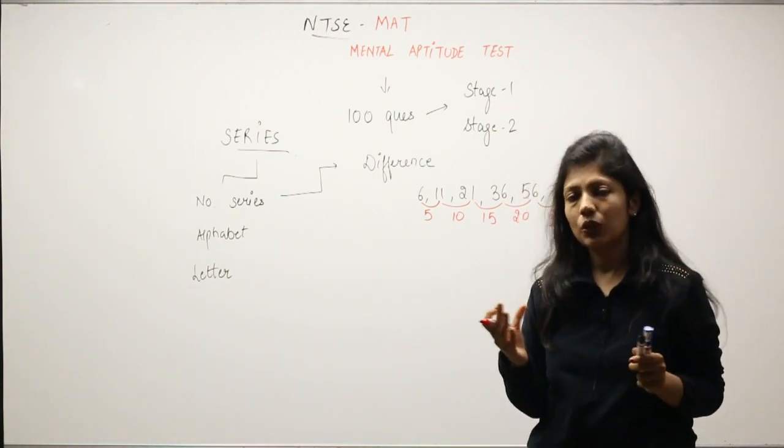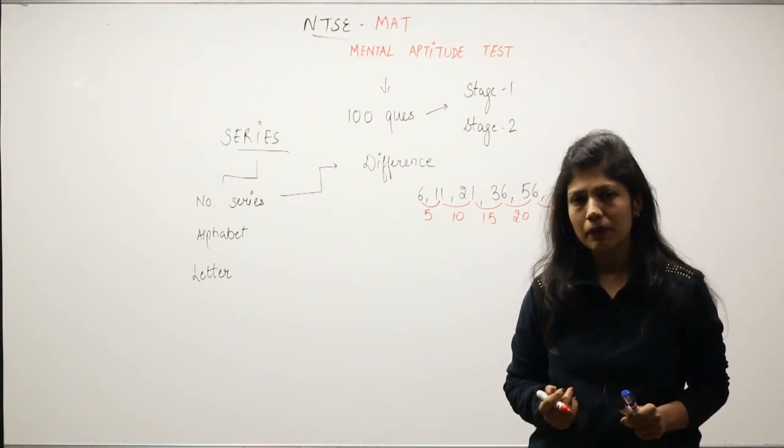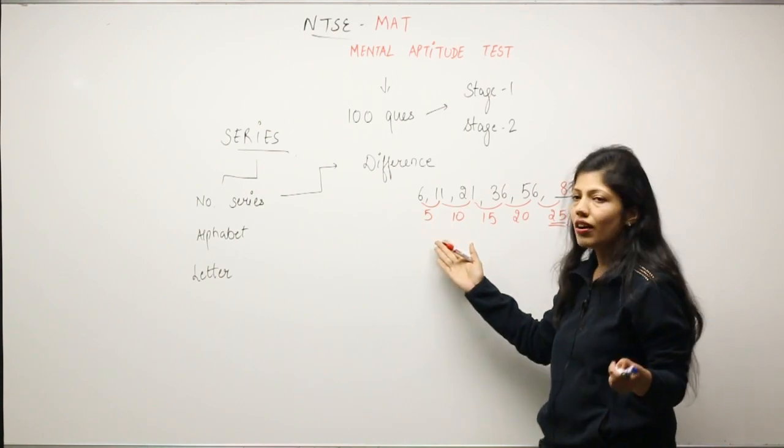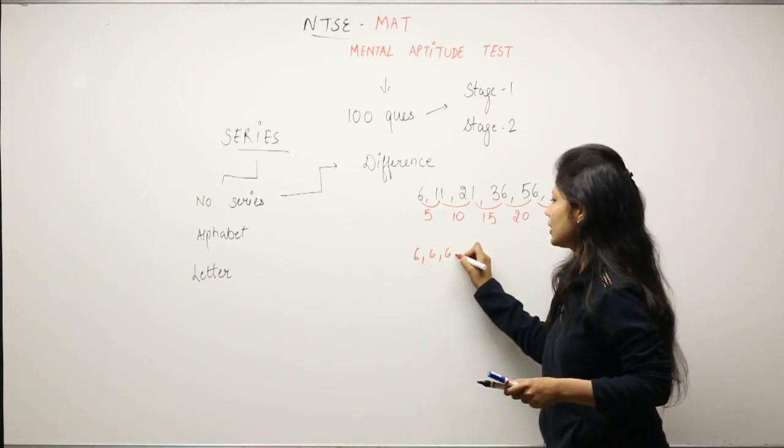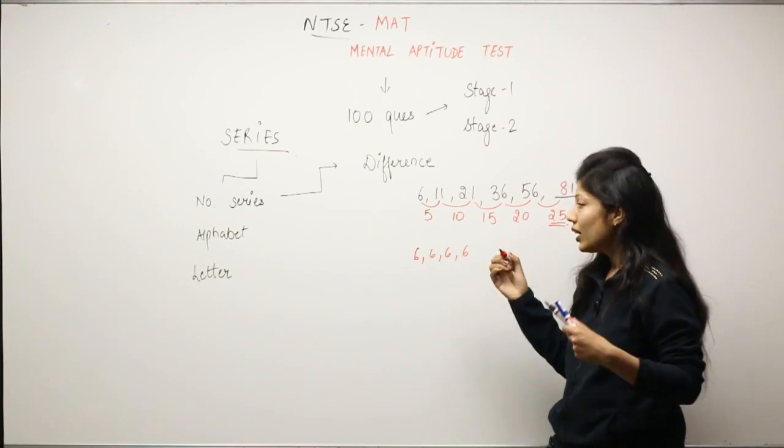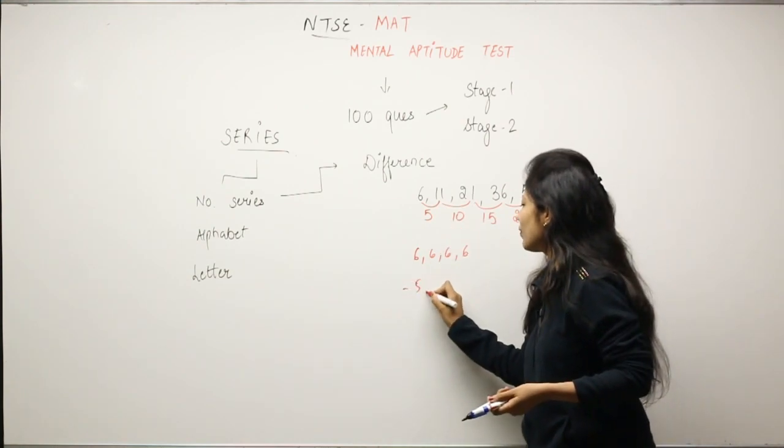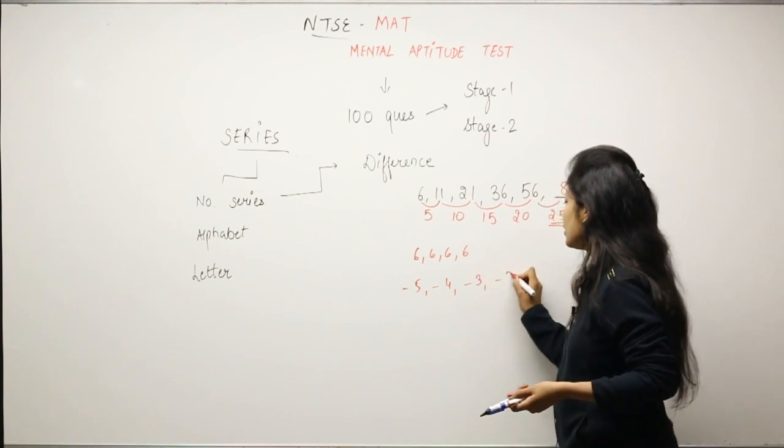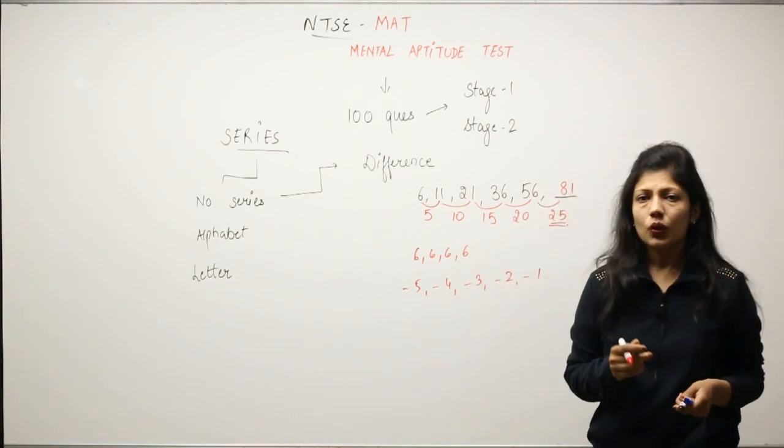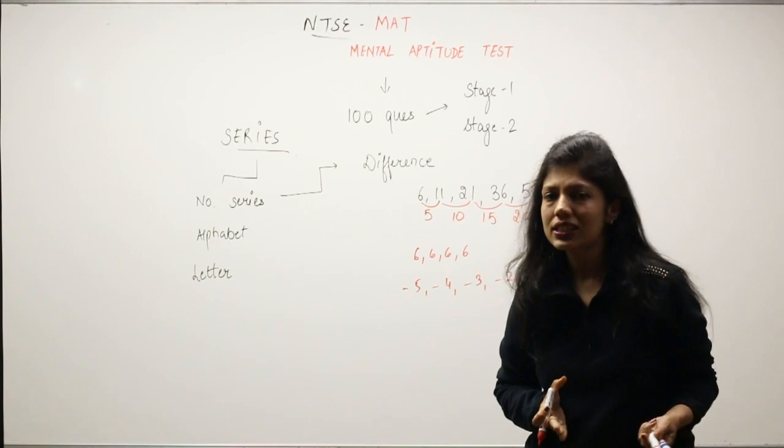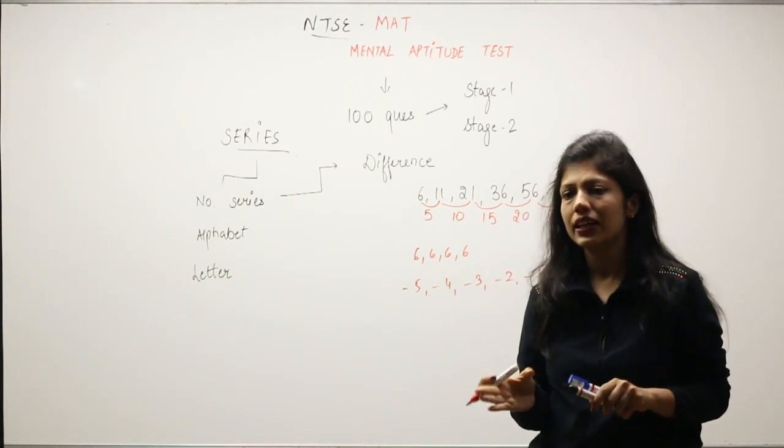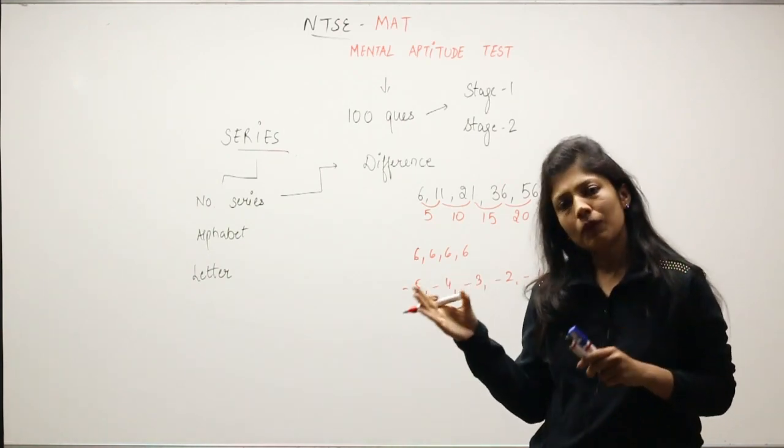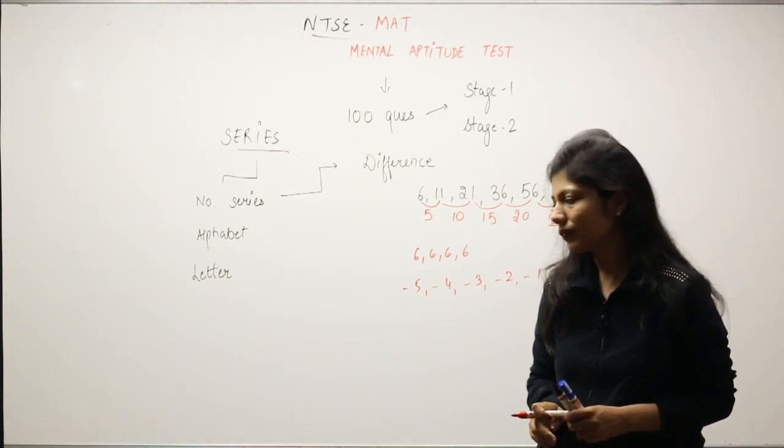In these questions, we need to find the difference. Difference ke bahut saare patterns ho sakti hai. One was 5, 10, 15, 20. Difference can be fixed: 6, 6, 6, 6, 6. Koi bhi number fixed hai. Difference can be decreasing also: minus 5, minus 4, minus 3, minus 2, minus 1. Aapko bas karna kya hai? Aapko difference laga ke dekhna hai. Difference definitely koi pattern batayega, jo understandable hoga, humeh samaj ayega. Hum uske according will solve the question.